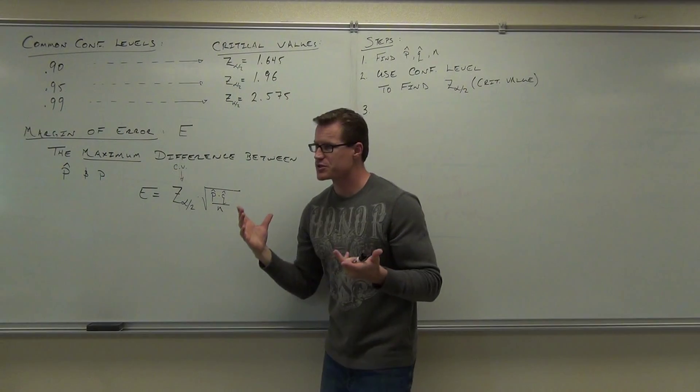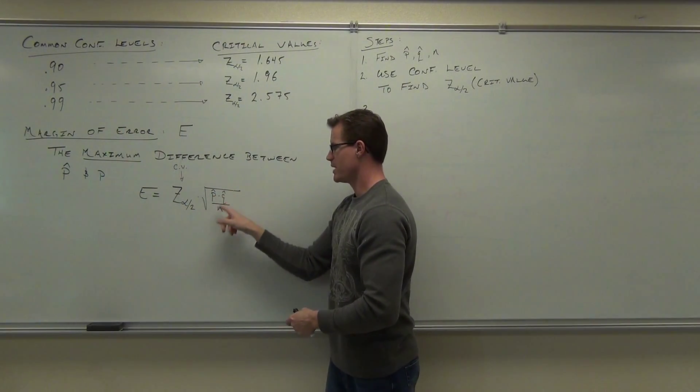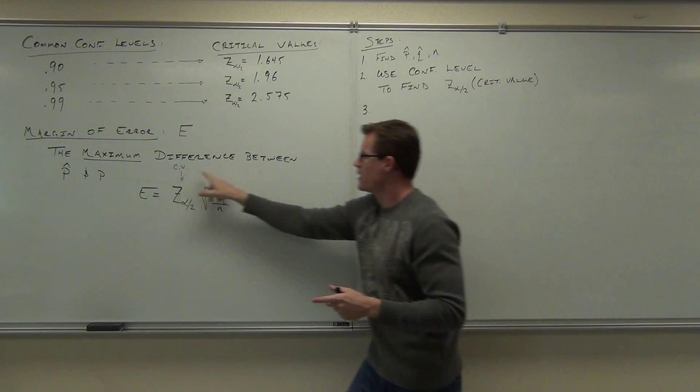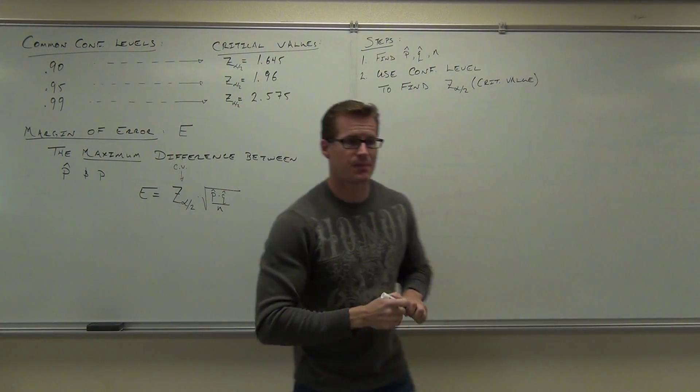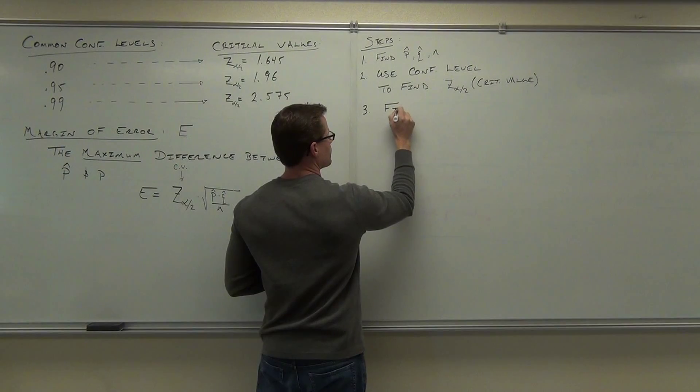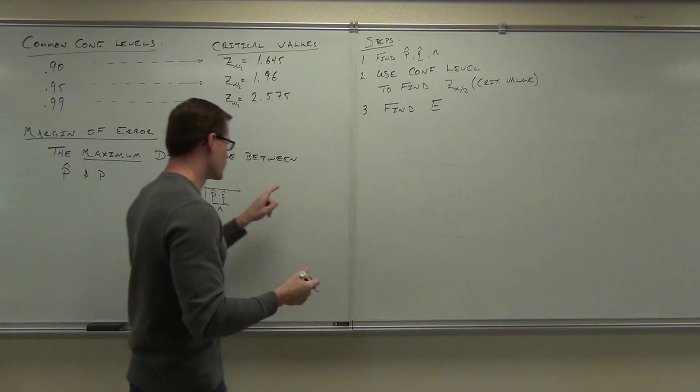So basically our first two steps are just filling out this thing. P hat, q hat, n, and then z alpha over two. That is your critical value. So step one and two fills this thing out. Step three says, okay, now calculate it. Find e. Remember that e equals this.